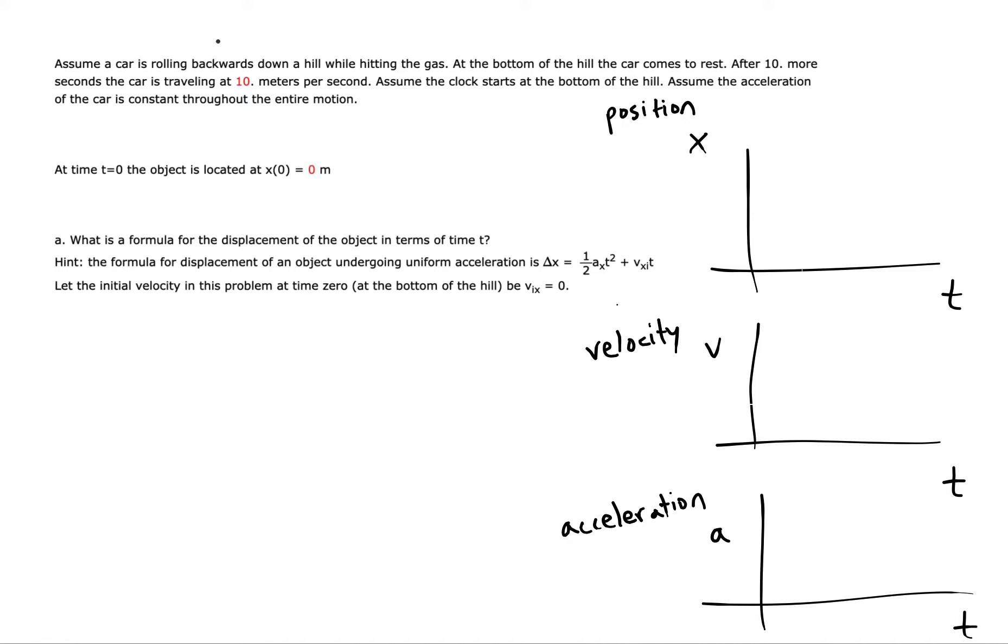Alright, so the car is rolling backward while hitting the gas but at the bottom of the hill the thing comes to rest. So I'm gonna let the origin here be the bottom of the hill and up here would be the top of the hill. So we're gonna start from the bottom, X equals zero. That's where T is zero. So we're starting the clock.